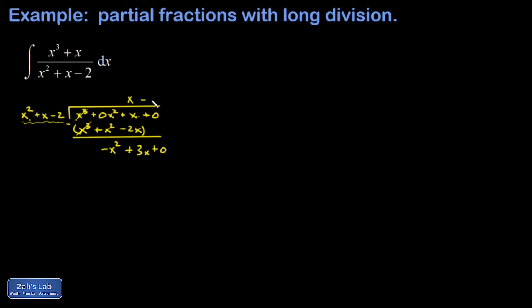Now I move to my constant term. If I put a negative 1 in here and distribute that to this trinomial, I'm going to get negative x squared minus x plus 2. I subtract this and I get 4x minus 2. So that 4x minus 2 is the remainder.